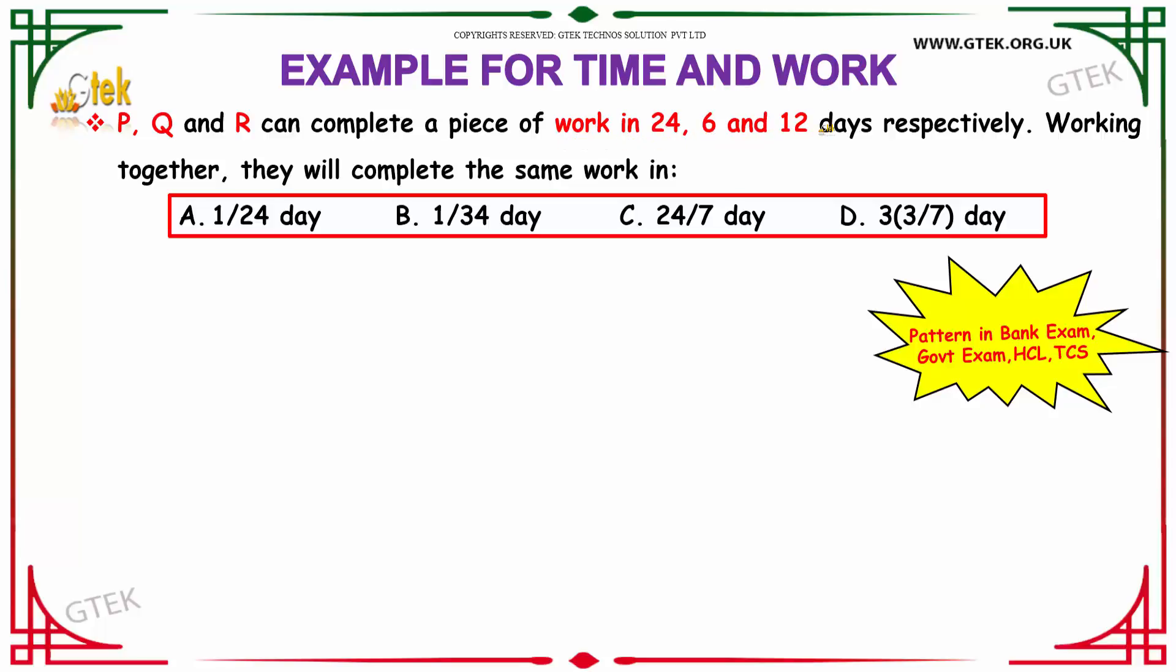P, Q, and R can complete a piece of work in 24, 6, and 12 days respectively. Working together they will complete the same work in how many days? Our options are given over here.